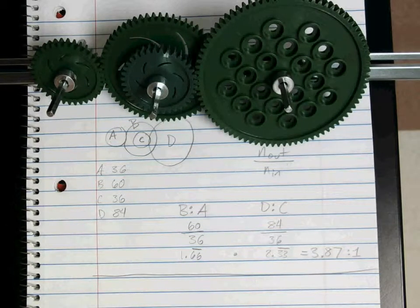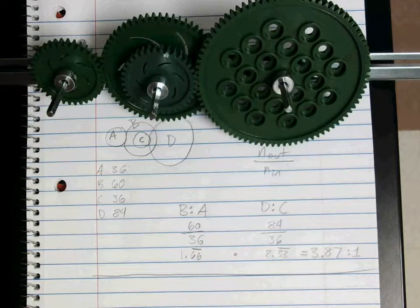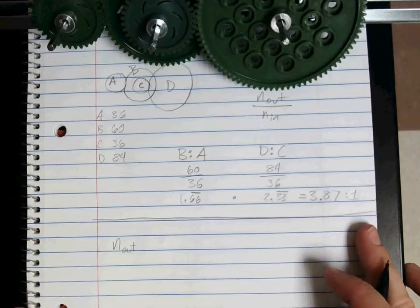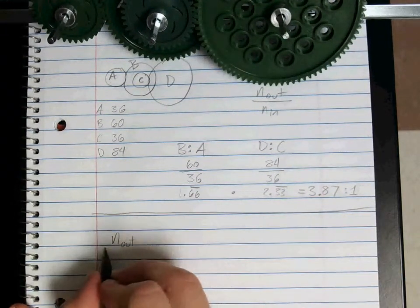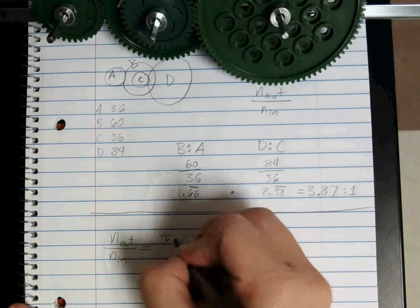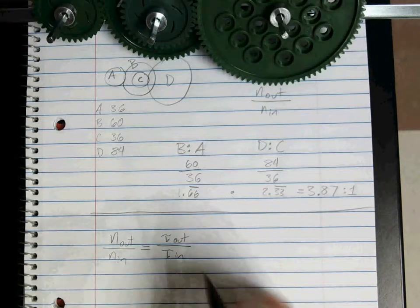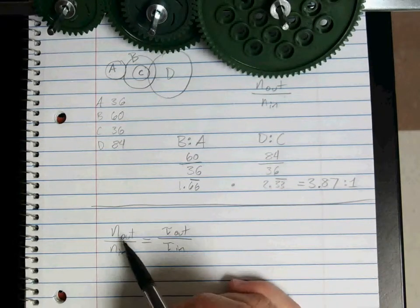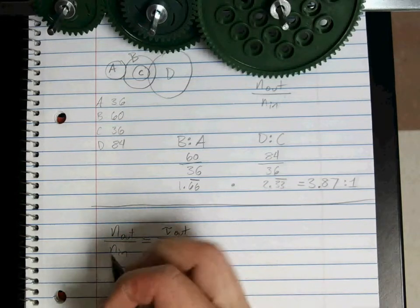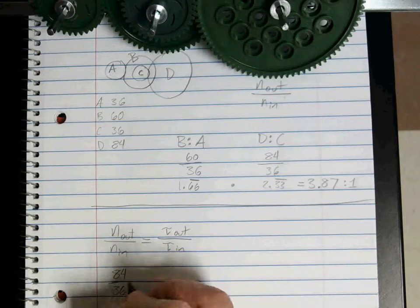So if we're taking a look at it, we know that our N out divided by your N in is equal to your torque out over your torque in. So we know N out and N in, it's saying for A and D. So D will be our out, in this case 84. A is in, so 36. Again, just in this case, use your own numbers.